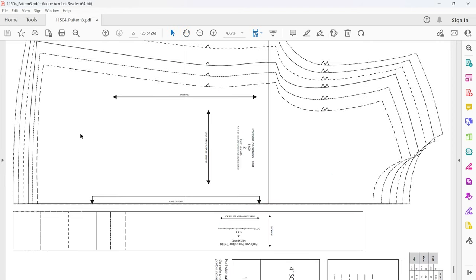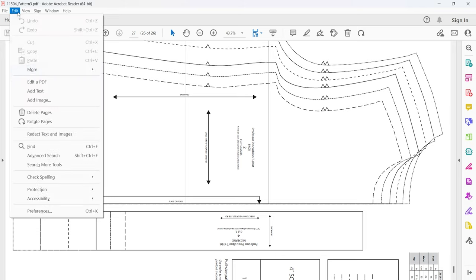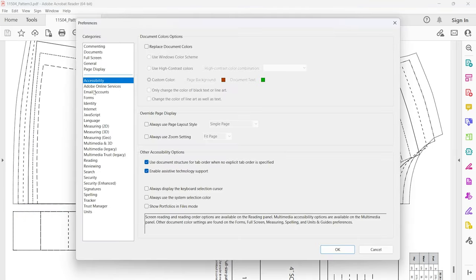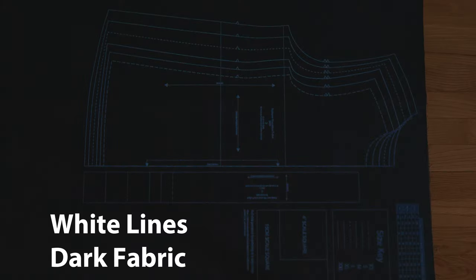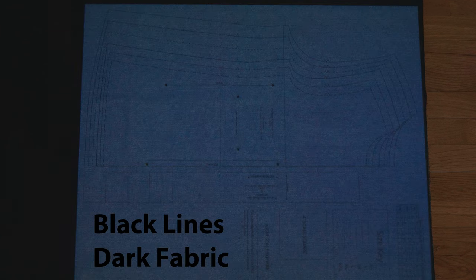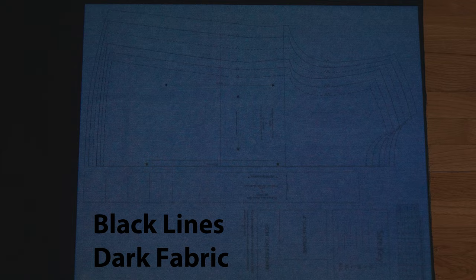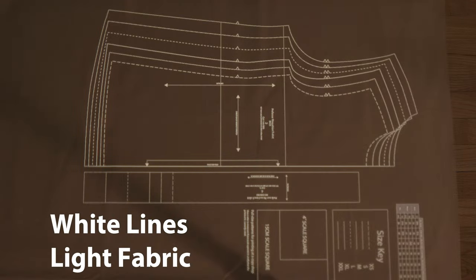If you have dark fabric and dark pattern lines, you might be able to change the projected color of the lines. Go to Edit, Preferences, Accessibility. Check replace document colors. Choose the radio button for custom color. For page background, select black. For document text, choose white. Select the check box for change the color of line art as well as text. Now hit OK. The document should now have a black background and all the lines and text should be white, which will be easier to see on dark fabric. To undo, just unselect Replace document colors.